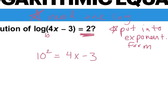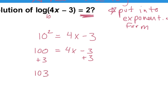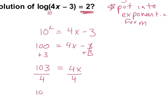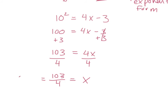Now we just solve for x. 10 squared is 100, and that's equal to 4x minus 3. To solve for x, we can add 3 on both sides, so we have 103 is equal to 4x. Then we can divide by 4 on both sides, so we get 103 divided by 4 is equal to x, which would be 25.75. But you guys can leave your answer in fraction form — that's fine.